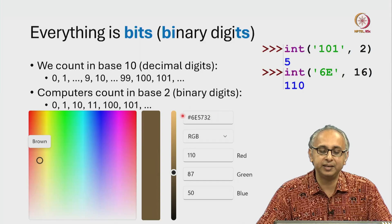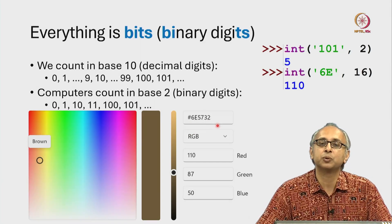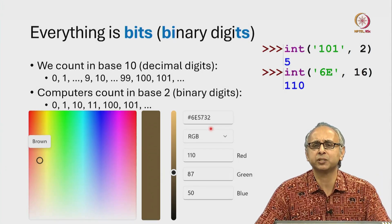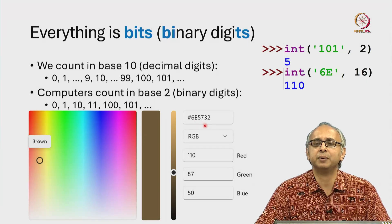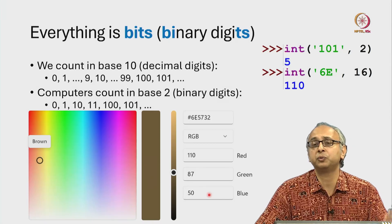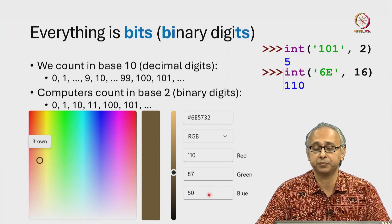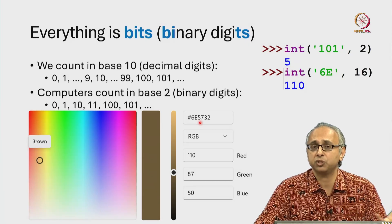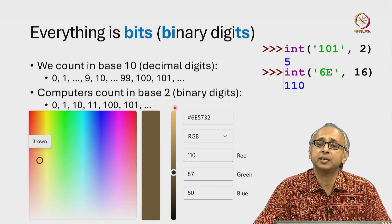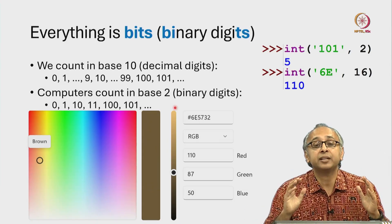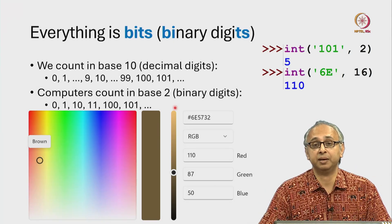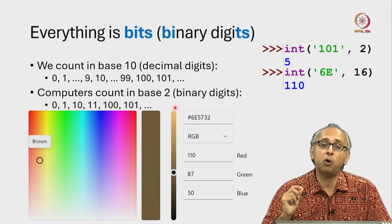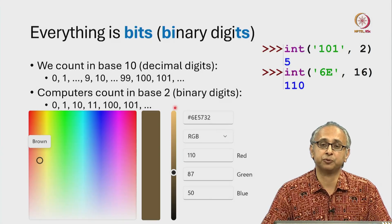The reason colours are displayed in hexadecimal is that in certain types of programming — for example, web development — you want to represent specific colours, and it is easier to represent them in hexadecimal rather than thinking of them in terms of three separate decimal numbers. So hexadecimal is another way of representing the same numeric information. As you can see, colours are represented as numbers, and in fact everything is represented as numbers — this slide, this video being recorded — all of it is internally represented as a sequence of zeros and ones.